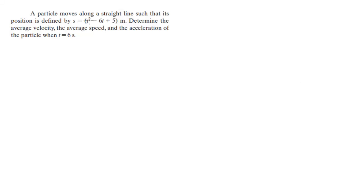Alright guys, a particle is moving along a straight line such that its position is defined by s equals t squared minus 6t plus 5. Find the average velocity, average speed, and the acceleration of the particle when t equals 6 seconds.